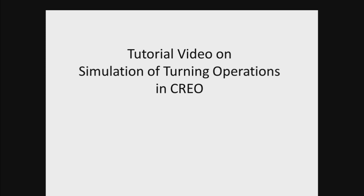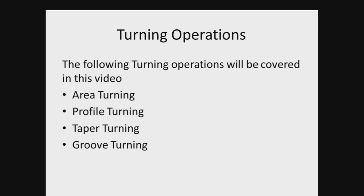First of all, let us learn what these operations are about, beginning with what is turning. Turning is a form of machining or a material removal process which is used to create rotational parts by cutting away unwanted materials radially. It is generally performed on a lathe machine or a turning center wherein the workpiece is clamped to the spindle and it rotates, and the cutting tool is moved parallel to the axis of rotation.